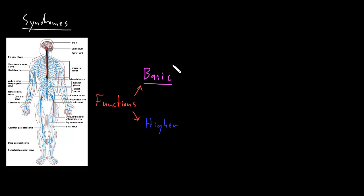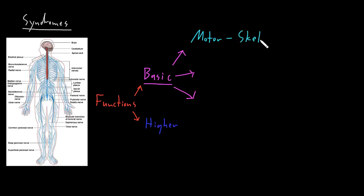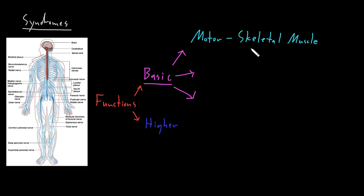I like to divide the basic functions of the nervous system into three big categories. The first category is motor. The word motor in this context refers to control of skeletal muscle — the main muscle all over our body that's attached to our skeleton. By controlling skeletal muscle, the motor functions of the nervous system cause movement, tone, and posture, which are the end results of skeletal muscle contraction.